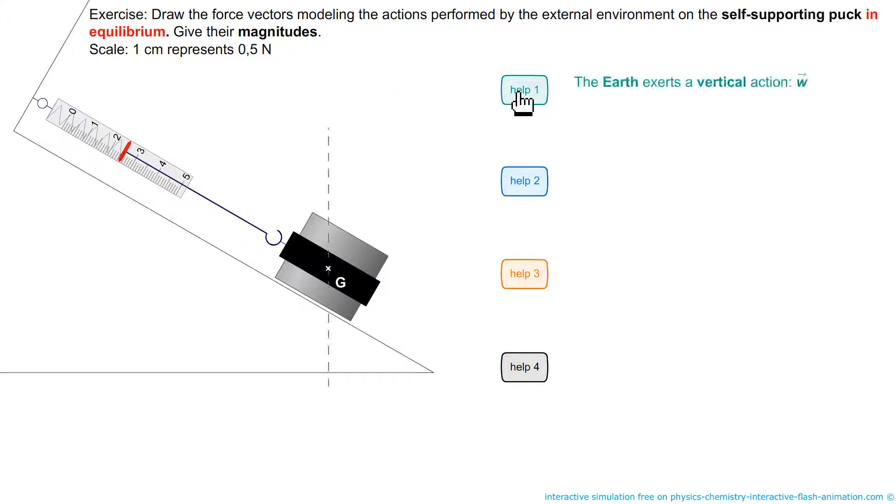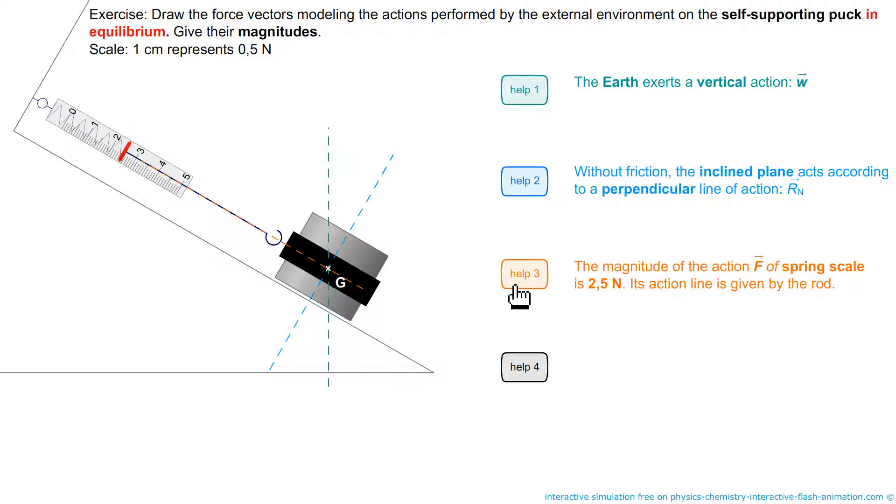The weight of the body acts vertically downward. In the absence of friction the reaction is normal to the surface, that is to say perpendicular. The scale reads 2.5 Newtons. The line of action is given by the rod in the axis of the spring. Finally, because the system is balanced in the laboratory reference frame, the sum of forces is zero. This is the principle of inertia or Newton's first law. We can also say that each vector is opposite to the sum of the other two.